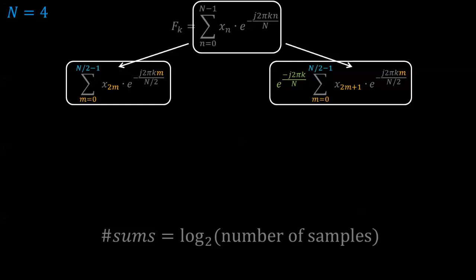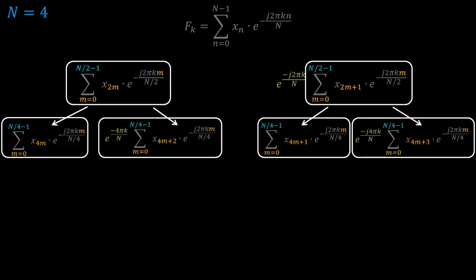We start off with our DFT equation, which we split into the even and odd segments. This split makes the range go from 0 to n over 2 minus 1. Since we have 4 samples, we are running from m equals 0 to m equals 1. We can split one more time so that the summation runs from 0 to 0, resulting in just one sample. Because the summations are over one term and are equal to 0, the exponential terms within each summation drops to 1.